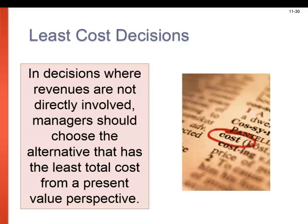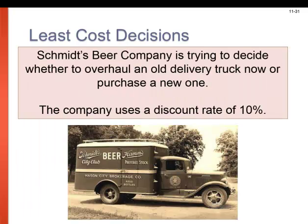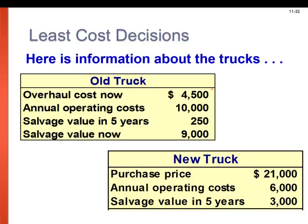Least cost decisions are used when revenue is not actually involved — we're going to choose the project that has the least total cost. Schmidt's Beer Company is trying to decide whether to overhaul an old delivery truck now or purchase a new one, and the company uses a discount rate of 10%. Neither option will generate any revenue. The cost of keeping the old truck: we'd have to overhaul it for $4,500, with annual operating costs of $10,000, a salvage value in five years of $250, or we can scrap it now and get $9,000.